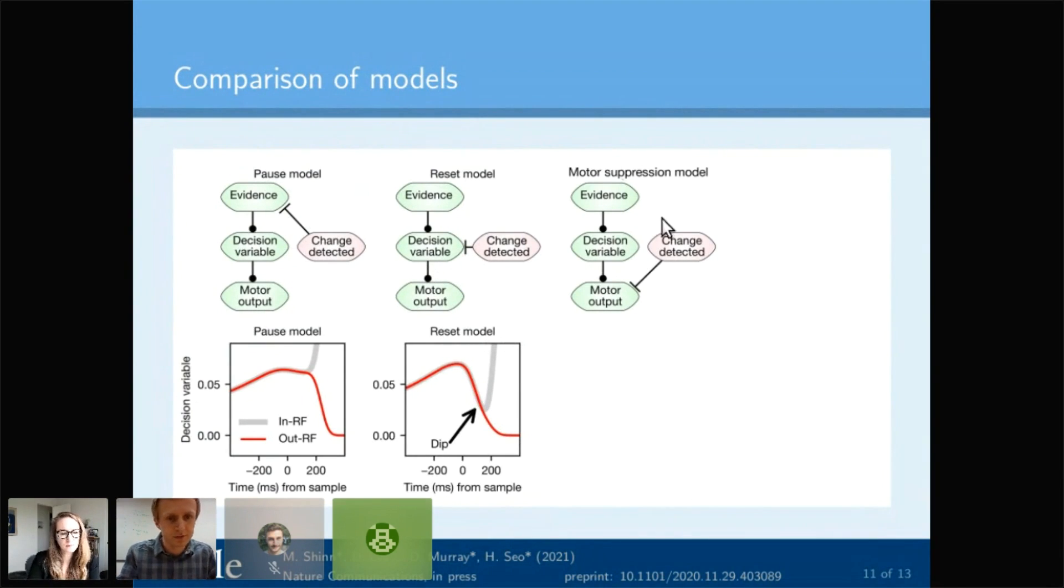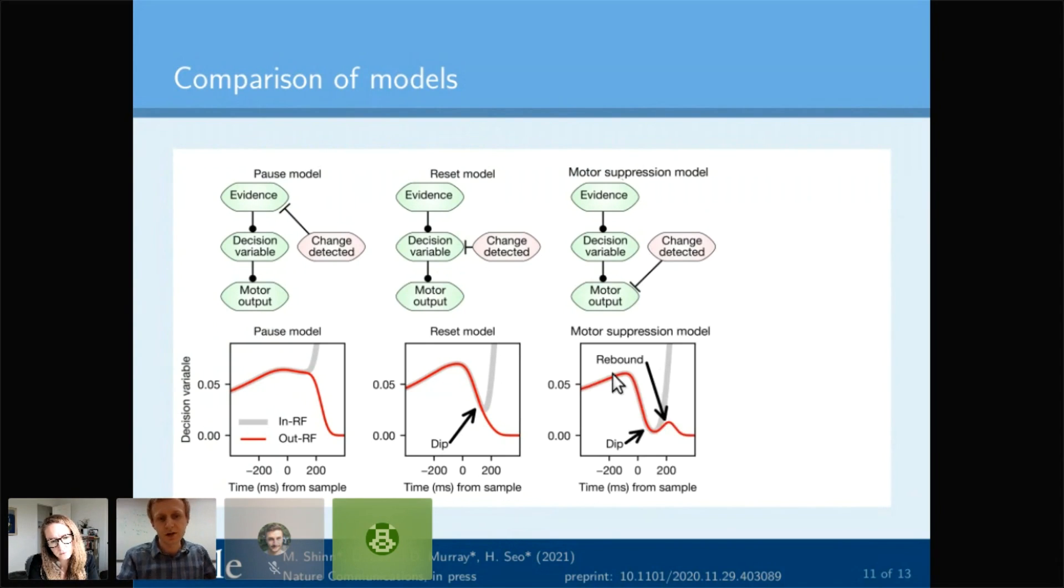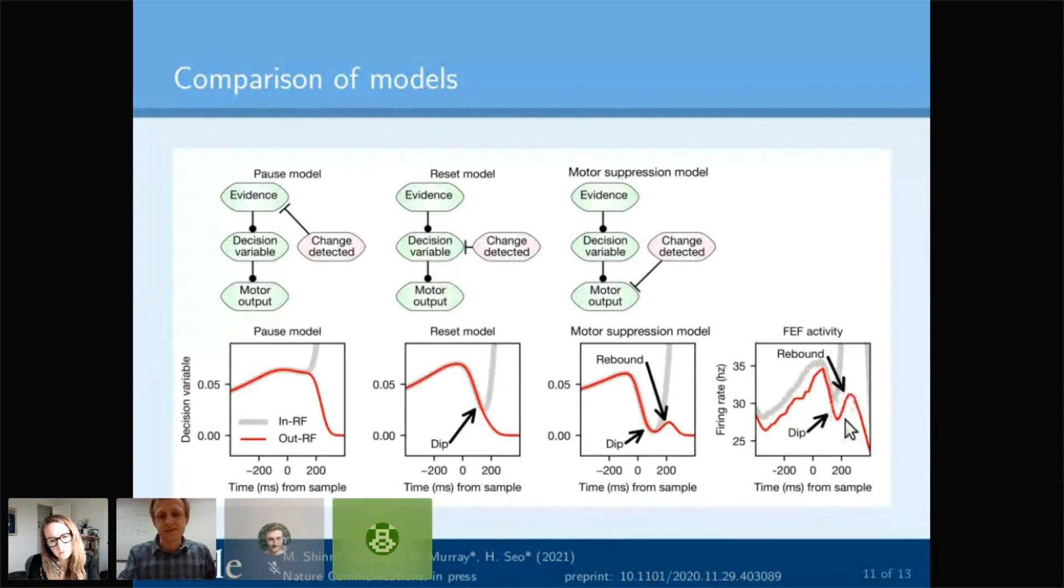We have one step left. Let's see what would be different if it were inhibiting motor output. If you detect the change probabilistically, instead of touching the decision variable, the decision variable stays exactly as it is—you just briefly pause your motor output. If you briefly pause motor output, you see this dip, but you not only see it within the receptive field in gray, you also see it in cells outside the receptive field in red. This is because there's this rebound effect. And when we look at what's actually inside the frontal eye fields, we see this rebound. This is giving us evidence that this motor suppression model is maybe a pretty good model.